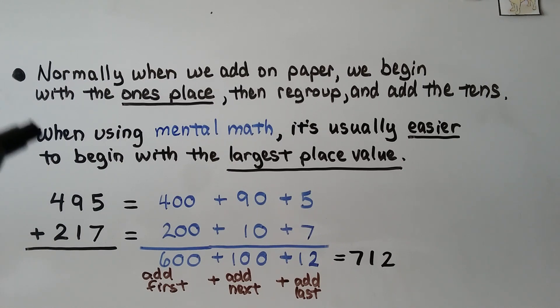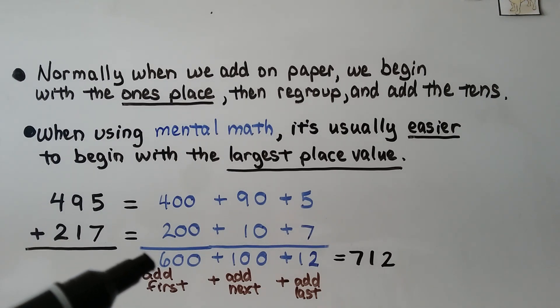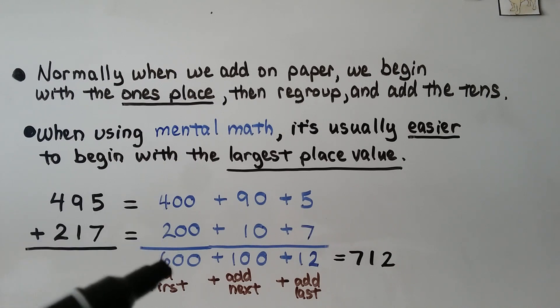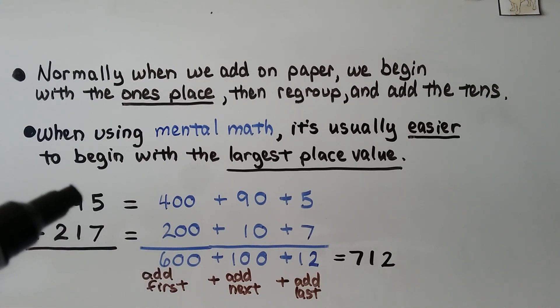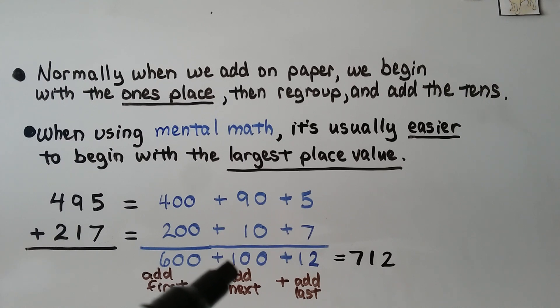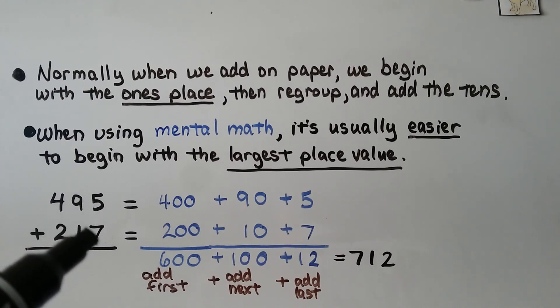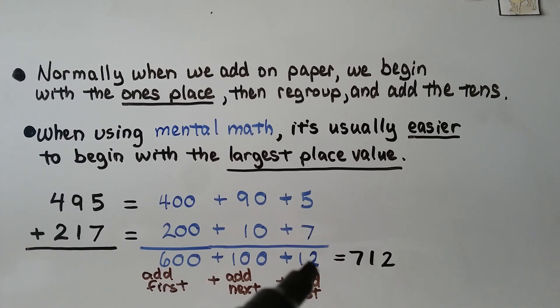When using mental math, it's usually easier to begin with the largest place value. So to add 495 plus 217, we would add 400 and 200 and get 600. We'd add these first. Then we'd add the 90 plus the 10 and get another 100. Then we would add the 5 plus the 7, which is 12, and we would add that.